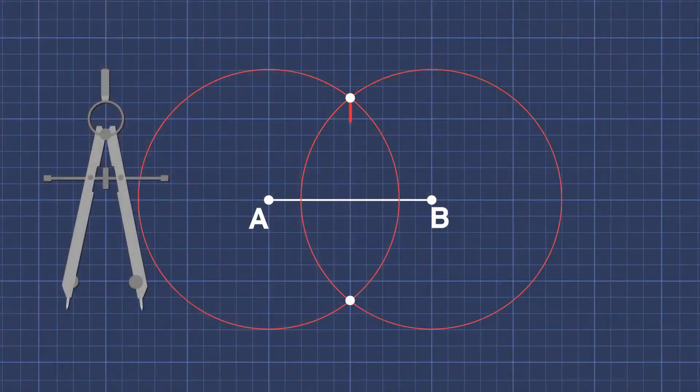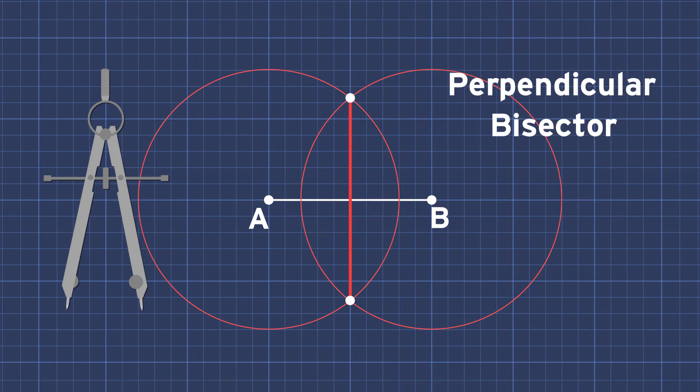And look, those line up pretty nicely. Now draw a line straight through with your ruler. Yeah, now that looks pretty good. That's not good. It's perfect. That's a perpendicular bisector.